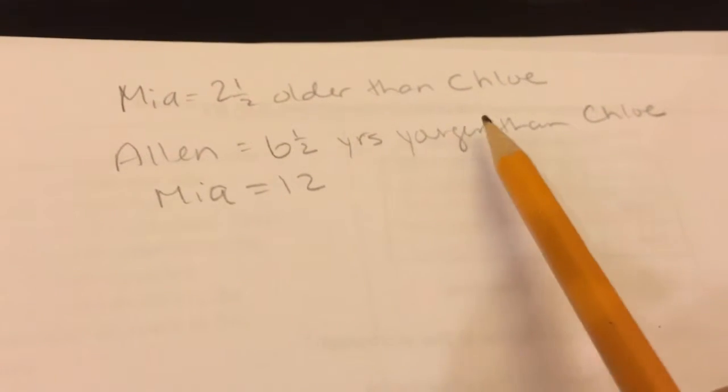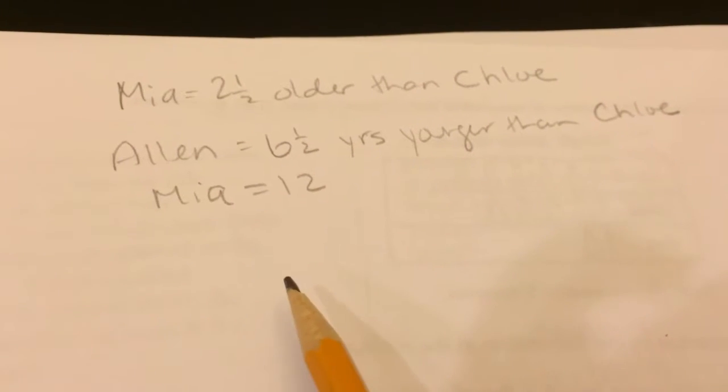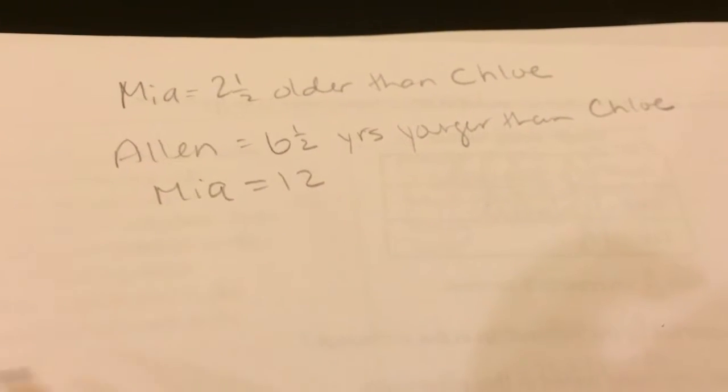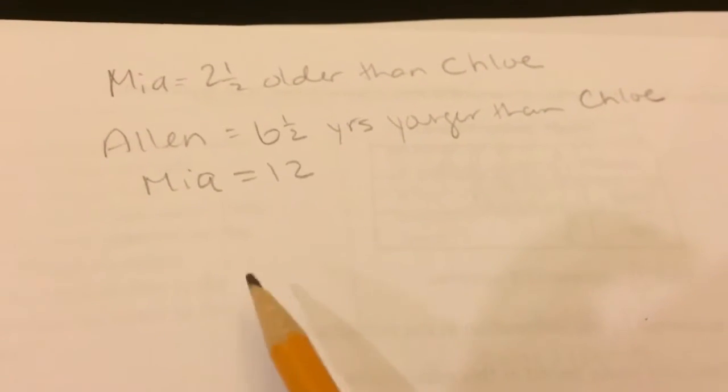Alright, so I know Mia is 2½ years older than Chloe, Alan is 6½ years younger than Chloe, and Mia is 12 years old. And for me, even if I had the problem in front of me, I would still make these notes just so I can help remember what's going on.